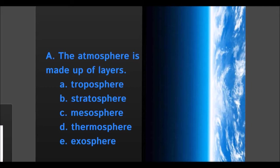Remember, 'meso' means middle. There's actually a mesosphere in the Earth — we have the lithosphere, the asthenosphere, the mesosphere, then the outer and inner core. In the atmosphere, we also have a mesosphere, which is the middle layer. If I'm going too fast, make sure you pause so you can write your notes, because when I'm at home I tend to go a little bit faster.